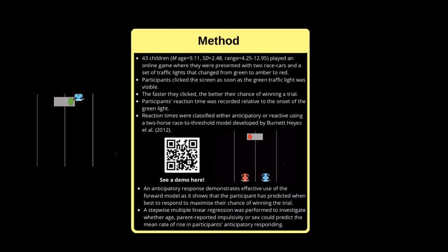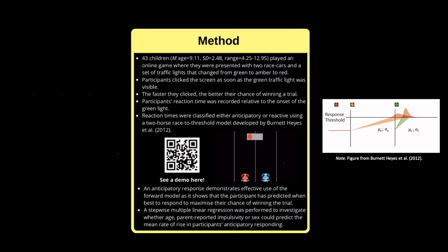Participants' reaction times were classified as either the result of an anticipatory or reactive decision-making process using a two-horse race to threshold model developed by Bernard Hayes et al., 2012. An anticipatory decision-making process begins before the green light's onset and increases slowly towards the threshold required for action execution from the onset of the amber light.